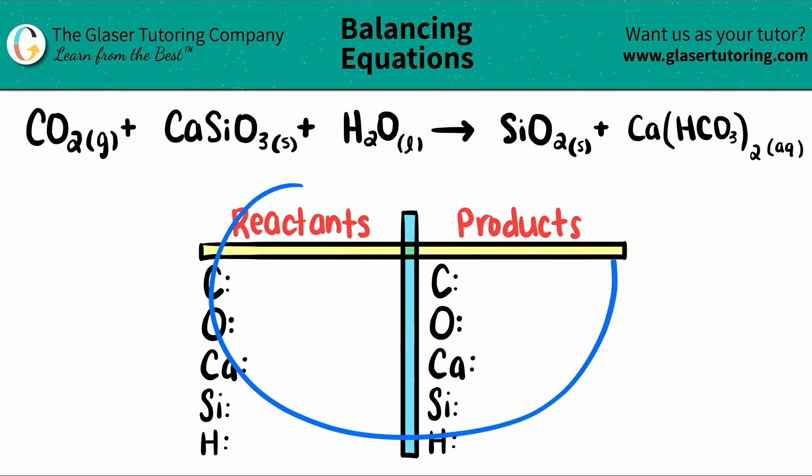I already wrote us a chart and all the elements that I see are on the reactants and the products, the left and the right sides. So all we have to do is just label how many we have of each, and then we'll get to balancing.